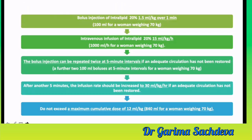The intralipid protocol: give a bolus of 20% intralipid at 1.5 ml per kg over one minute — for a woman over 70 kg, give 100 ml. Then give a maintenance infusion of 20% at 15 ml per kg per hour. The bolus can be repeated twice at five-minute intervals if adequate circulation has not been restored. After another five minutes, increase the infusion to 30 ml per kg per hour if needed. Do not exceed a maximum cumulative dose of 12 ml per kg — 840 ml for a 70 kg woman.